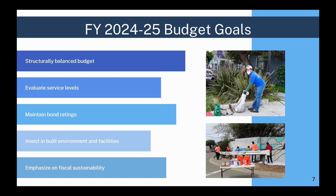For the fiscal year 2024-25 budget goals, we start off with a structurally balanced budget. We're evaluating service levels across all departments, maintaining those improved bond ratings, and investing in the city's built environment and facilities. The last goal is to emphasize being fiscally sustainable and establishing policies to ensure fiscal sustainability across all programs.